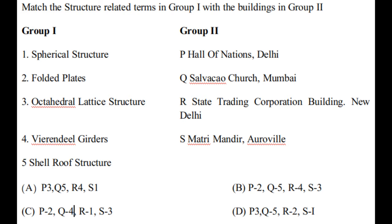In Group 2, the buildings are: Hall of Nations, Delhi; Salvakeo Church, Mumbai; State Trading Corporation Building, New Delhi; Mathri Mandir, Auroville.